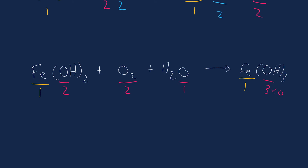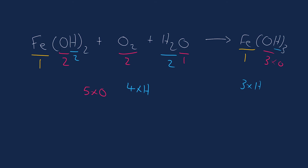Let's count all oxygen up: two plus two plus one gives five oxygen on the left. For hydrogen: two from water and two times one gives two from iron hydroxide — so four hydrogen on the left. On the product side: four times three gives twelve oxygen, and four times three gives twelve hydrogen. Oxygen is isolated on its own, so we can worry about oxygen last. Hydrogen is out of balance: four versus three.